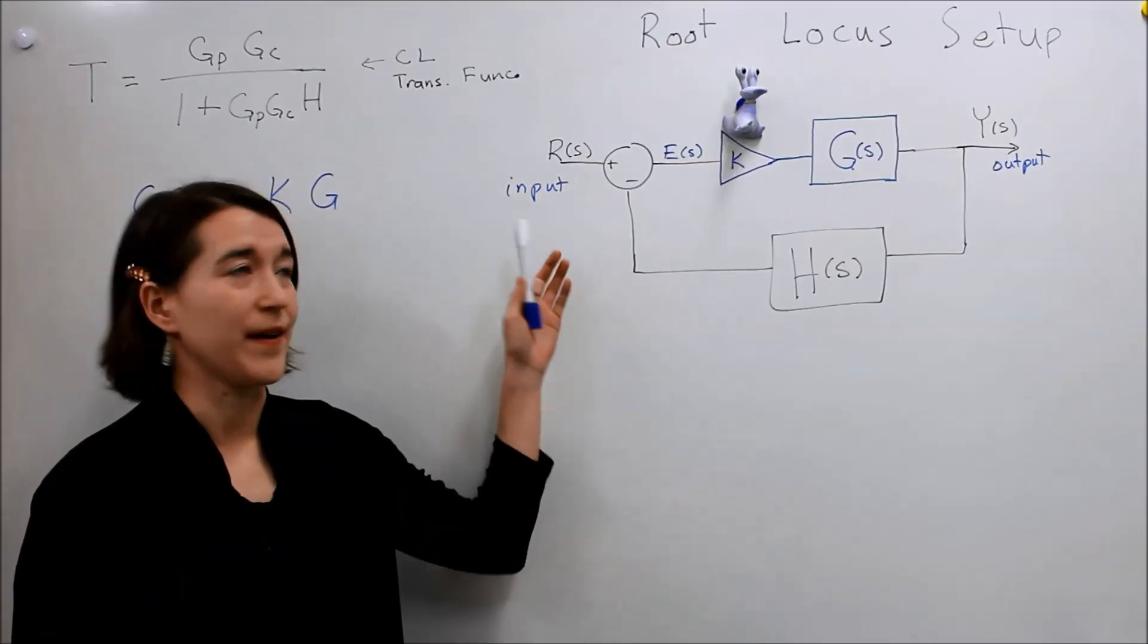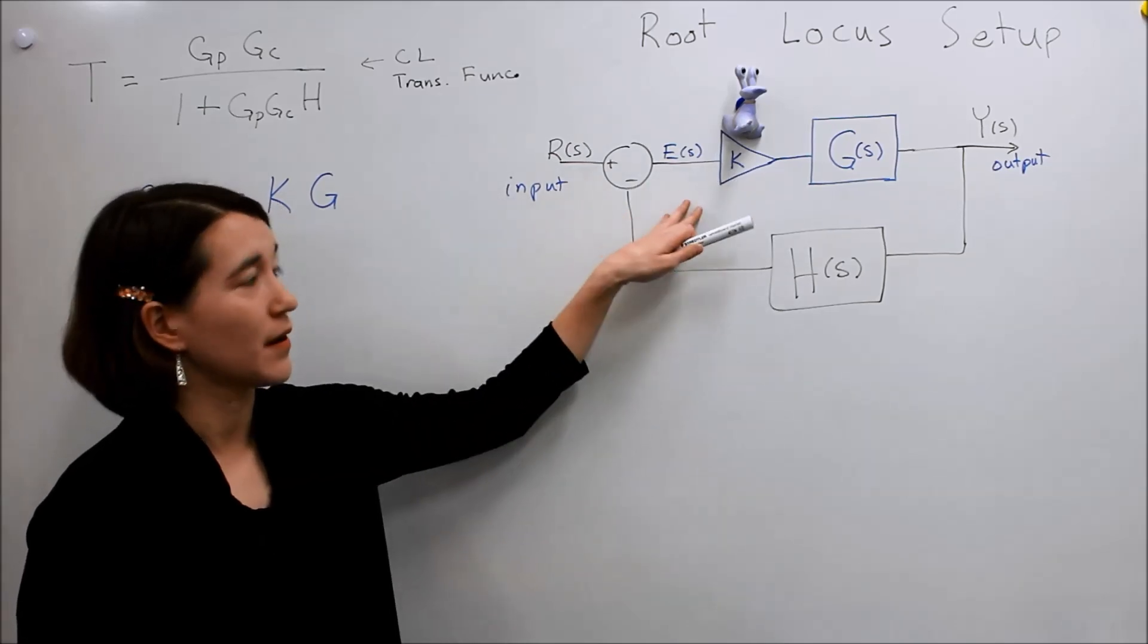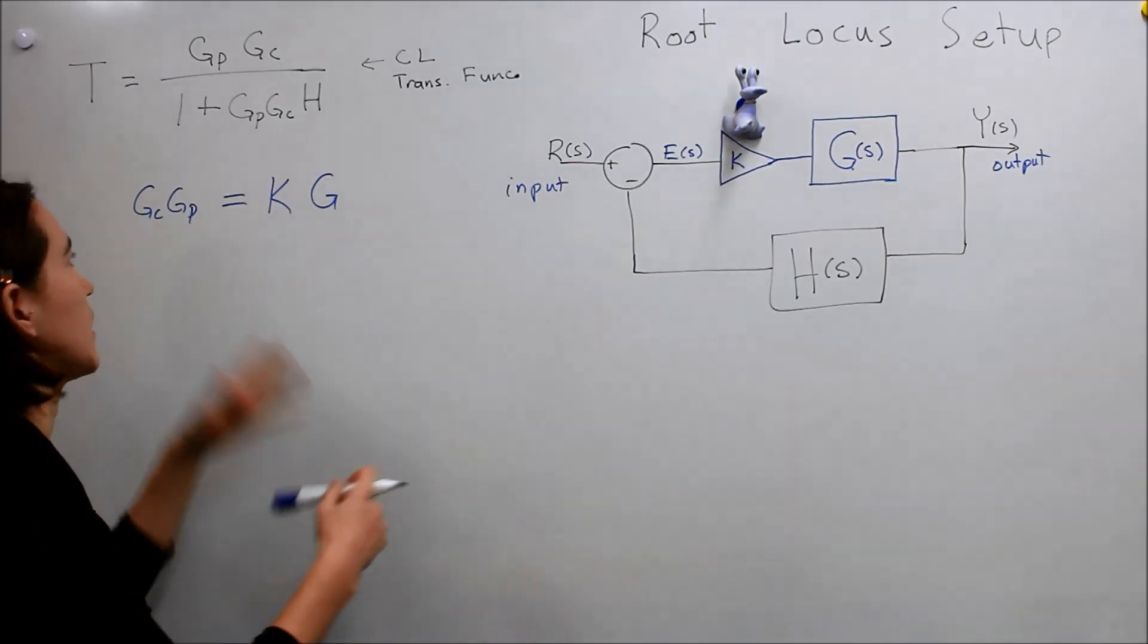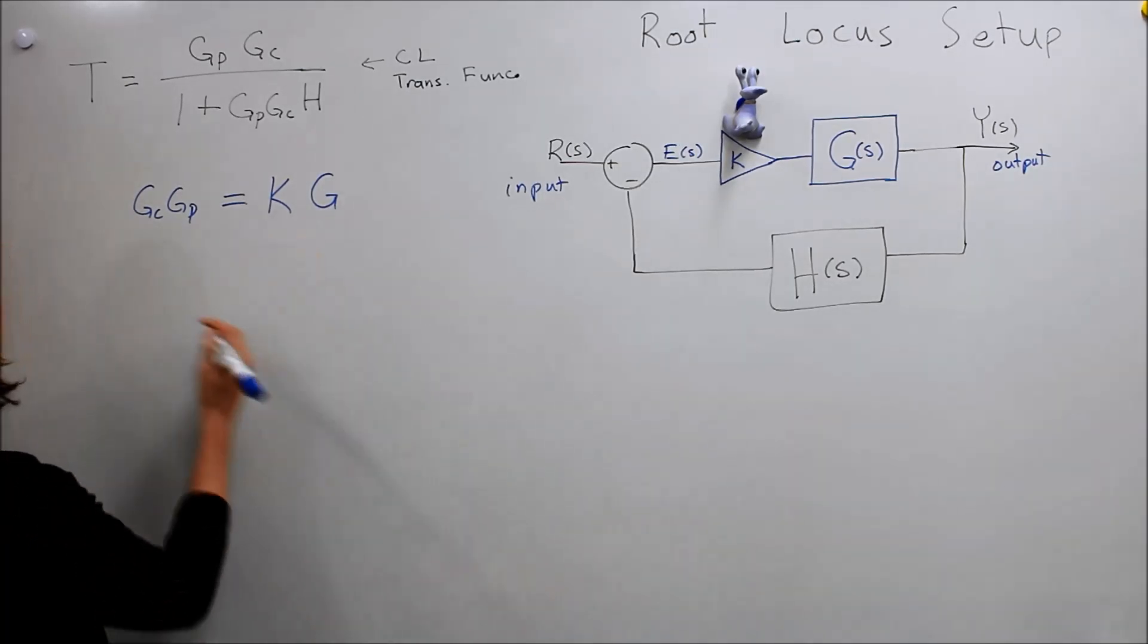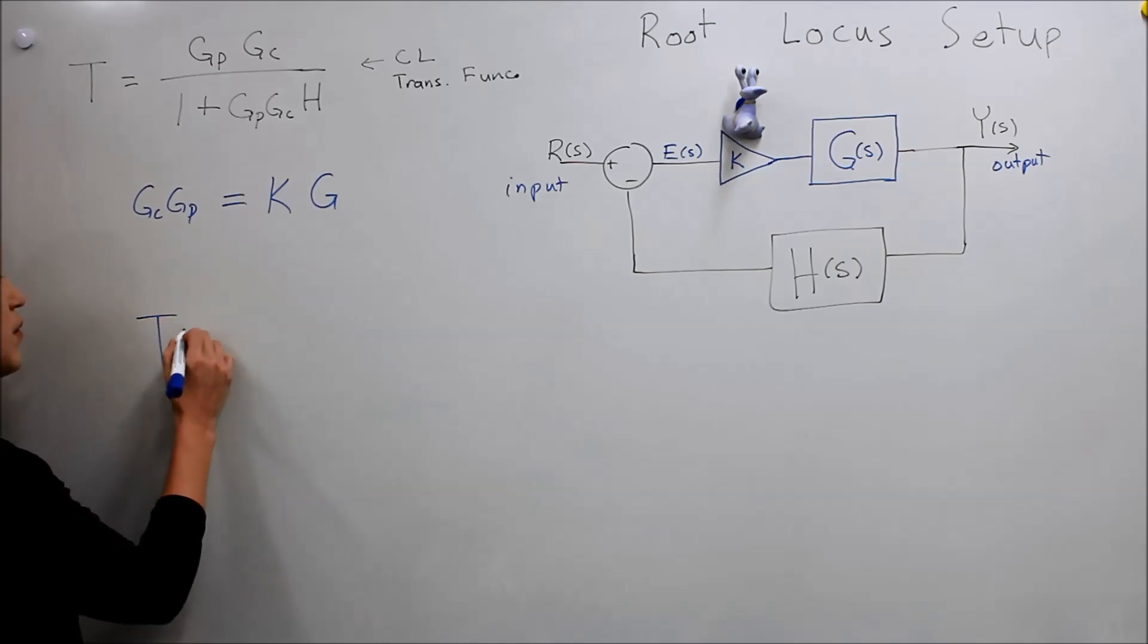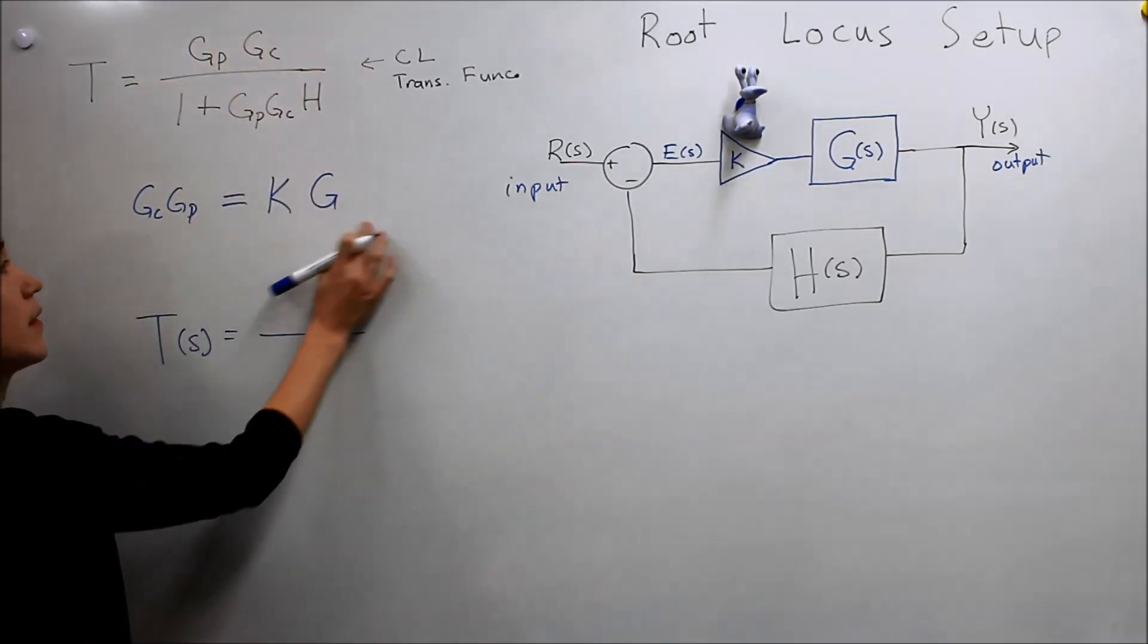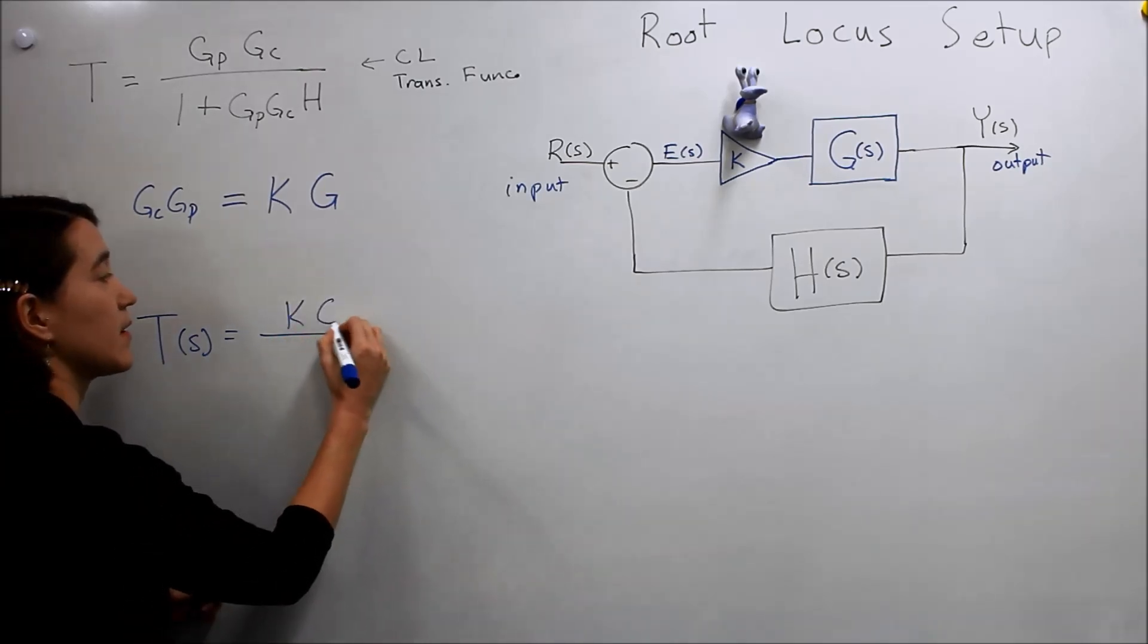Now that we've adapted our feedback loop with K and G, we now need to update our closed loop transfer function, so we can do that by replacing these values. So our new closed loop transfer function would be equal to, now just KG in the numerator, so K times G of s,